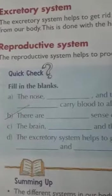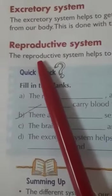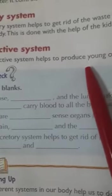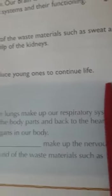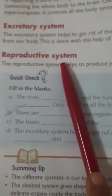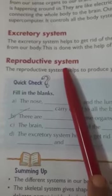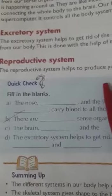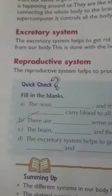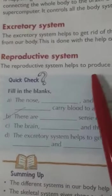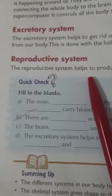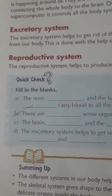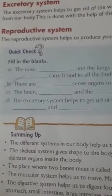The last organ system is the reproductive system. Reproduction means producing the young ones of their own kind. The reproductive system helps to reproduce young ones to continue life. Because of the reproductive system, life can be continued and organisms can produce their young ones of their own kind. That's it for today's video — our lesson is completed here.